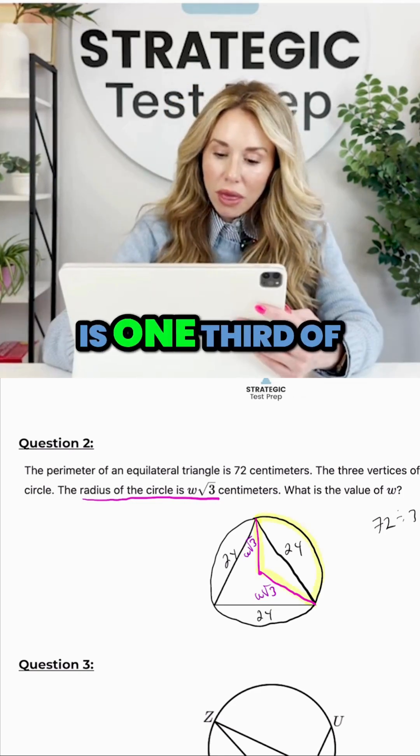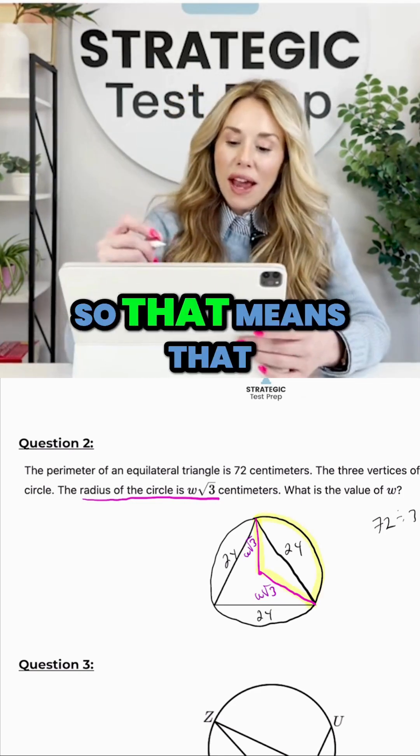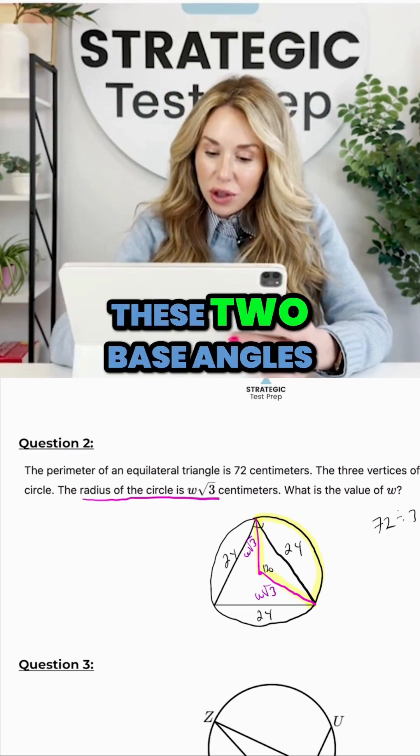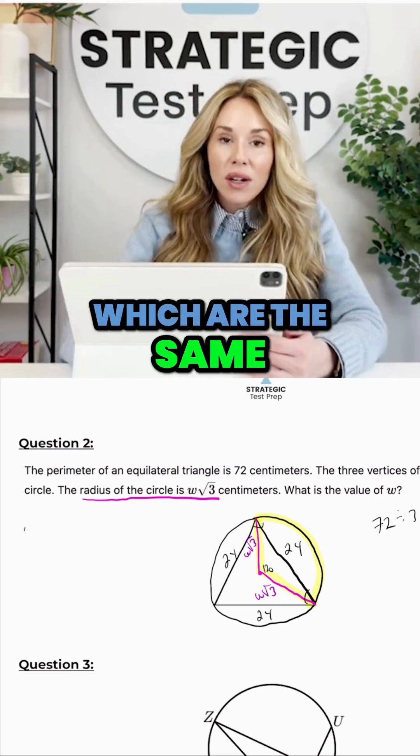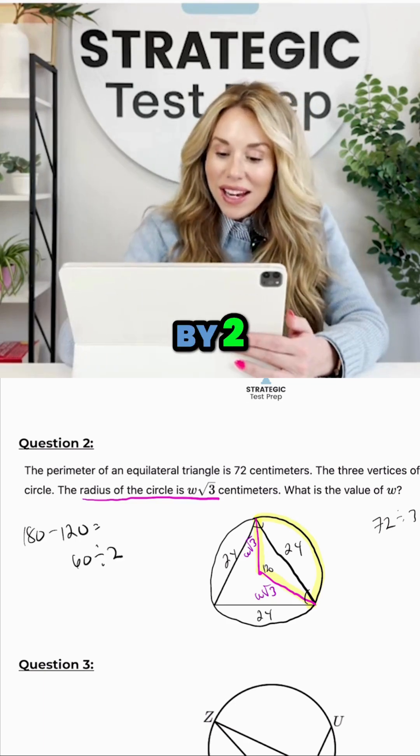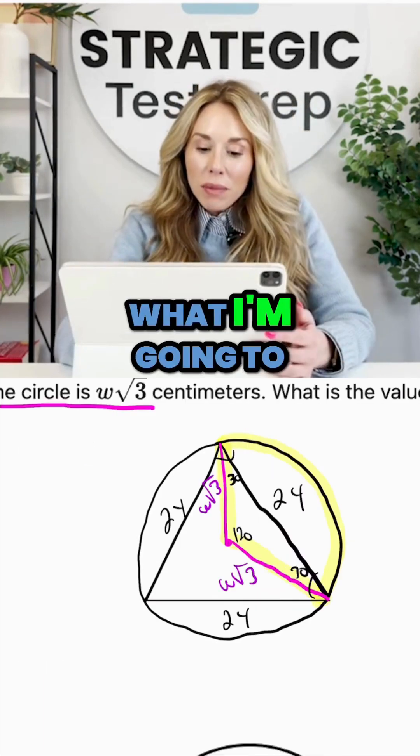This segment right here is one third of the circle, so that means that this central angle right here is 120 degrees. So if that's 120 degrees, these two base angles which are the same, it's going to be 180 minus 120, 60 divided by two. Each one of these is 30.